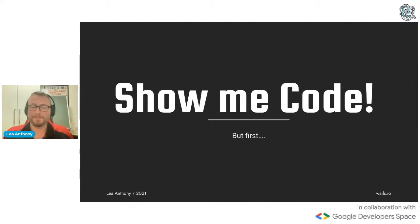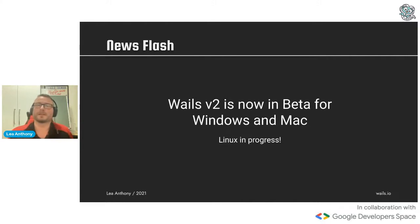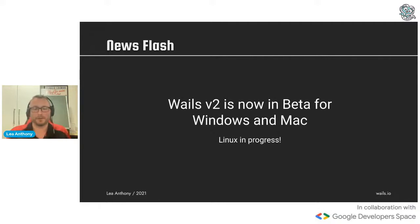Show me the code! But first - this week, newsflash: version two is now in beta for both Windows and Mac. Linux is in progress. Version one does support all three, but there are limitations. Version two is, I would say, almost a revolution instead of an evolution of the project. If anybody's used version one, some of these updates are going to be extremely welcome. If you haven't used version one, just assume it's always been like this.